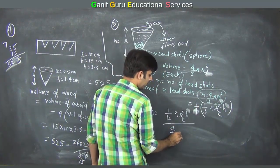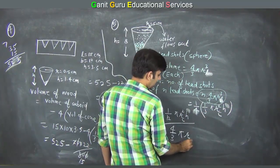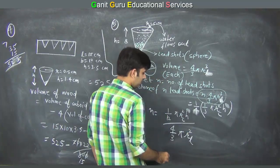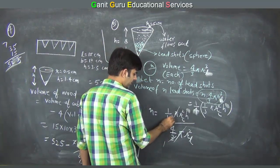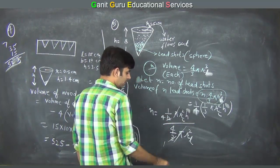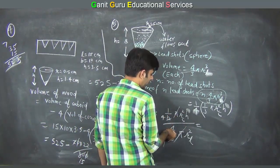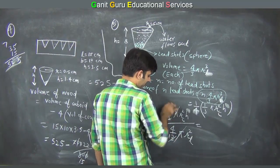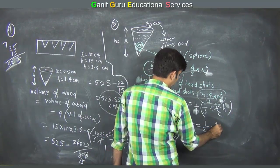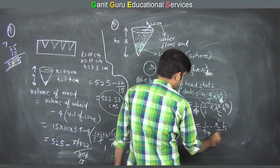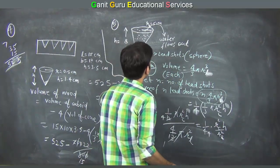Now π cancels with π. The 3s and 4s simplify — (1/3) divided by (4/3) gives 1/4, and combined with the outer 1/4 gives 1/16. So n equals (1/16) into r_c² h divided by r_l².